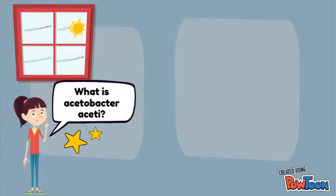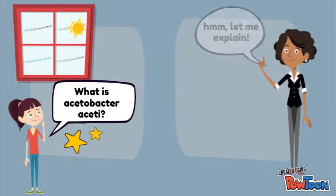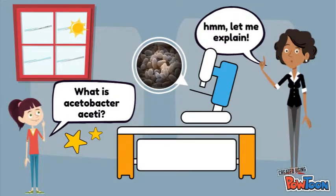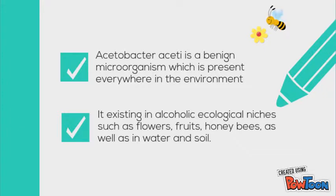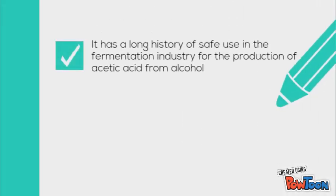Do you know what bacteria is used for food fermentation? One of them is Acetobacter aceti. Acetobacter aceti is a benign microorganism which is present everywhere in the environment. It exists in alcoholic ecological niches such as flowers, fruits, honeybees, as well as in water and soil.